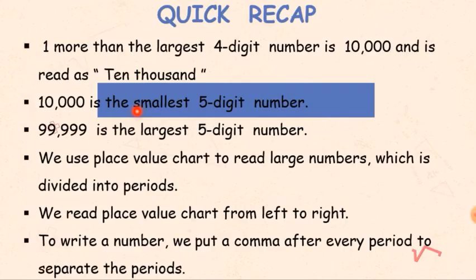Now a quick recap of what we have learned. The largest four-digit number is nine thousand nine hundred ninety-nine. If we add one to it, we get the smallest five-digit number: ten thousand. We use a place value chart to read large numbers, which is divided into periods. We read the place value chart from left to right, and we put a comma after every period to separate the periods.